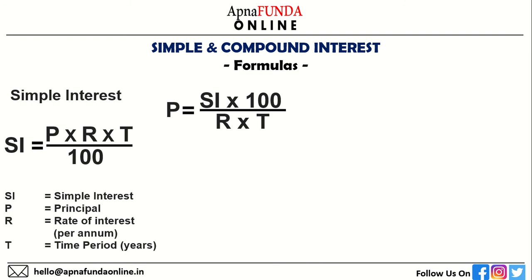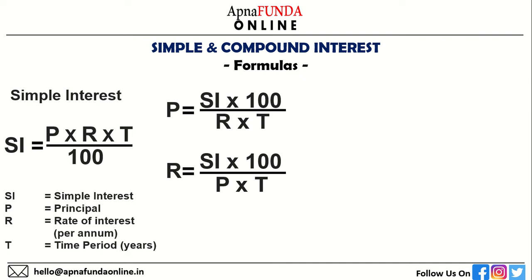Principal is equal to simple interest into 100 divided by rate of interest into time period. Rate of interest R is equal to simple interest into 100 divided by principal into time period. And lastly, time period is equal to simple interest into 100 divided by principal into rate of interest per annum.